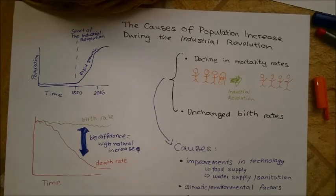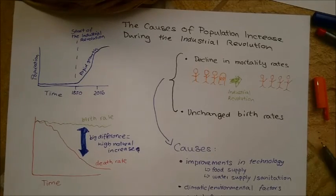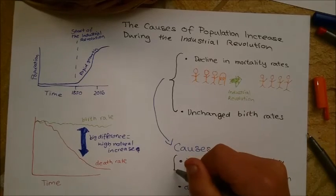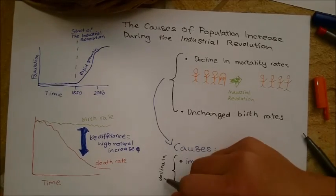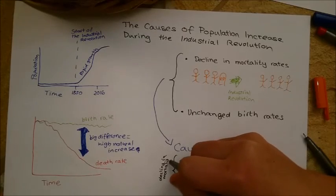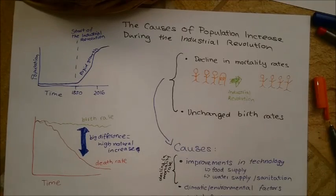And the fourth was that the fall in mortality was not immediately obvious and so people didn't think differently about having more children, so the fall in mortality did not immediately stimulate changes in behaviour.